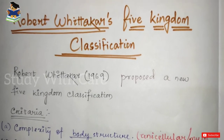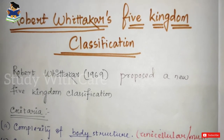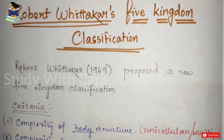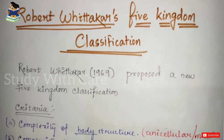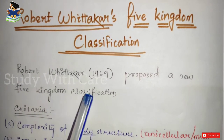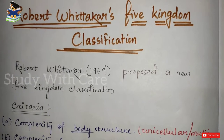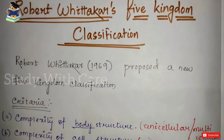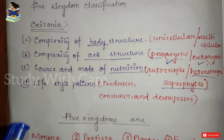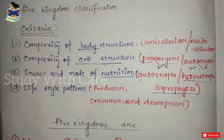As I said earlier, if the classification process is based on almost all the criteria of an organism, then it is considered as a natural system of classification. So we can say that Robert Whittaker's system of classification is a natural system of classification. Robert Whittaker in 1969 proposed a new five kingdom classification based on certain criteria. Now we will see what those criteria are.